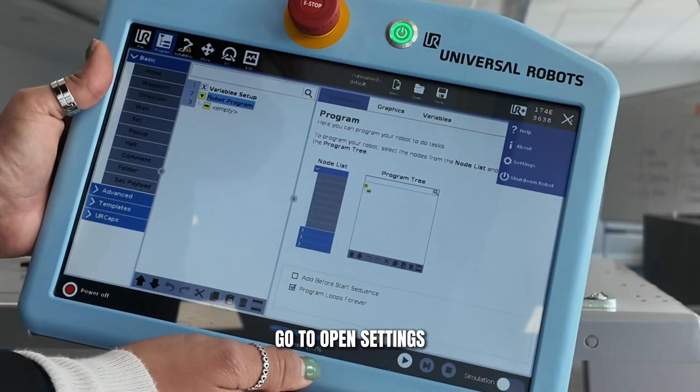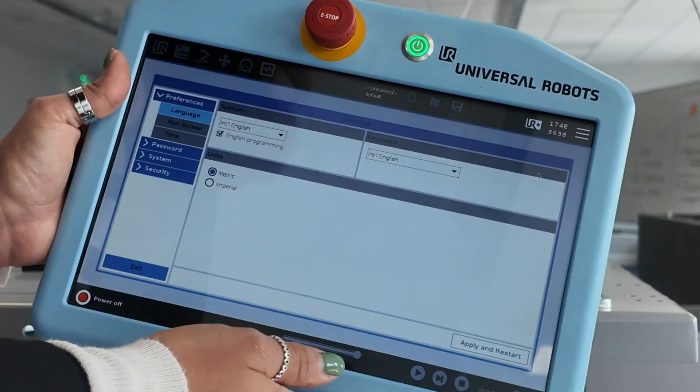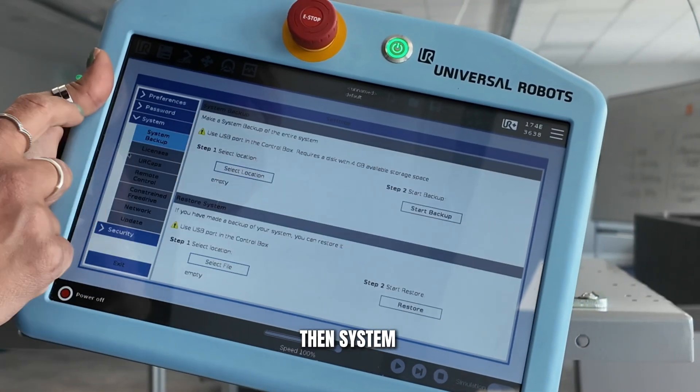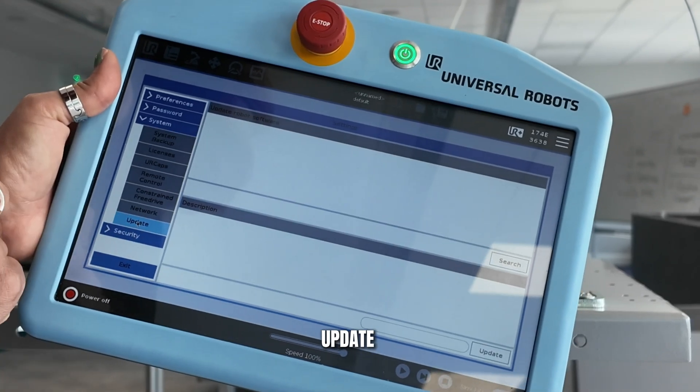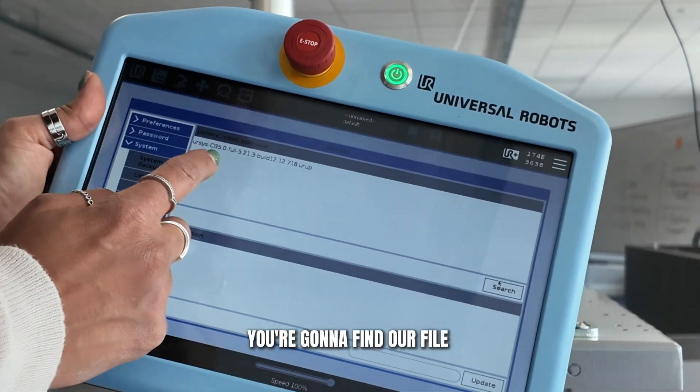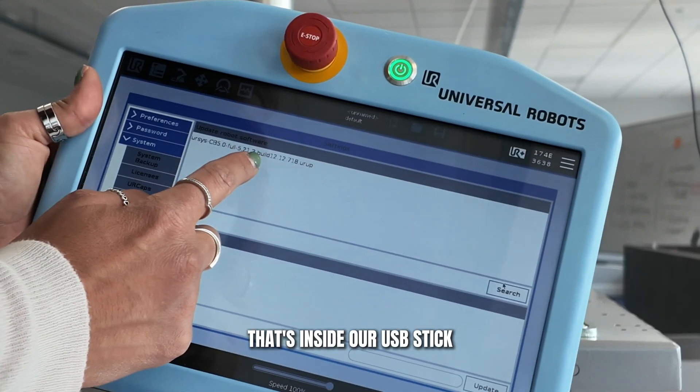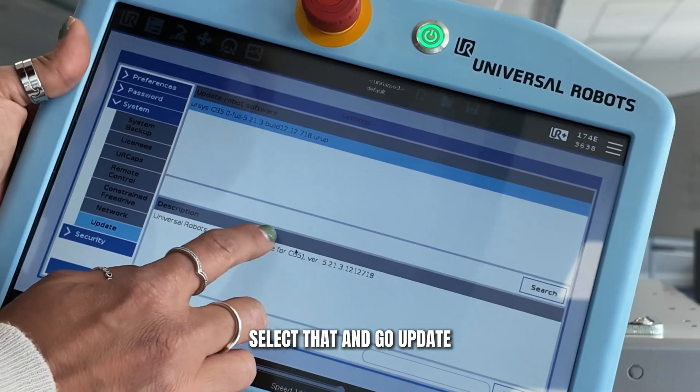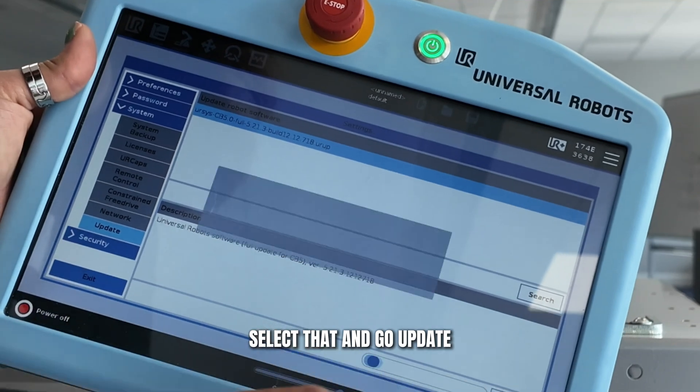You're going to go to settings, then system, then update, then we go search. I'm going to find our file that's inside our USB stick, select that and go update.